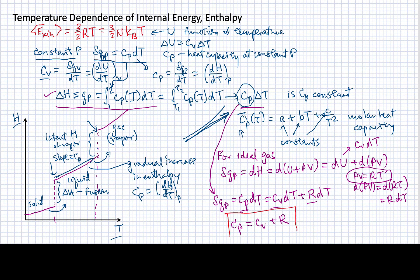This is true for ideal gases: the two heat capacities — at constant volume and at constant pressure — differ from one another by the gas constant R. Notice that always C_p is greater than C_v for ideal gases. This is also true in general. However, for solids or liquids, the constant volume heat capacity and the constant pressure heat capacity are virtually the same — very close to one another. So we're only going to see a major difference when talking about systems of gases. C_p is always generally a little bit greater than C_v because it includes some contribution from expansion that we can't get in a constant volume process.